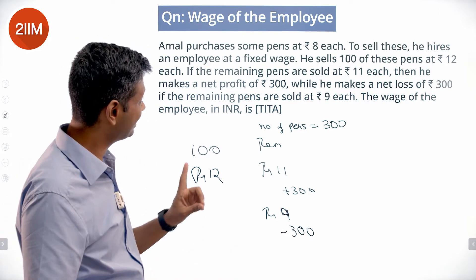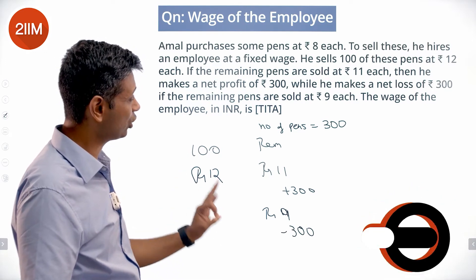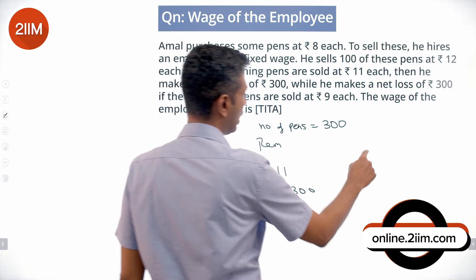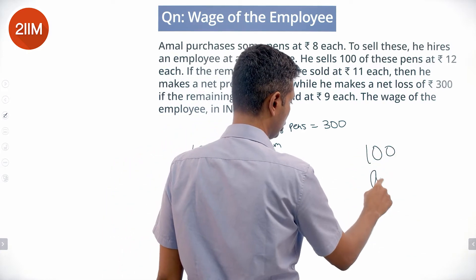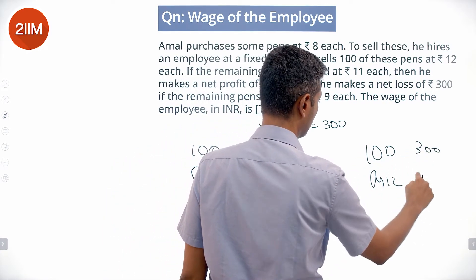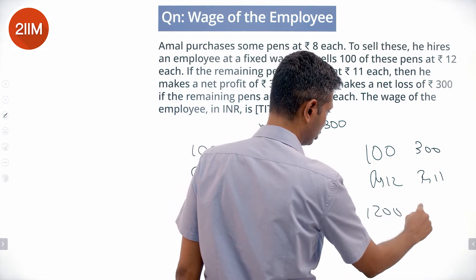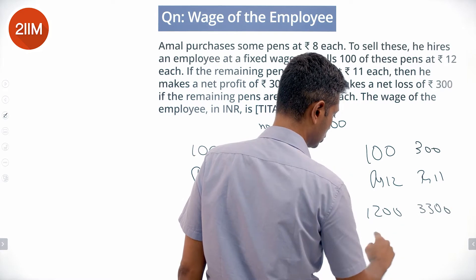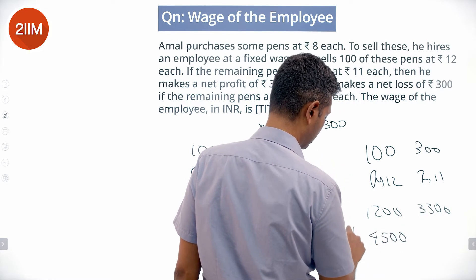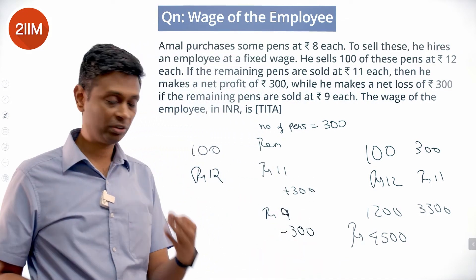Amal purchases pens at Rs. 8 each, hires an employee at a fixed wage, and sells 100 pens at Rs. 12 and 300 pens at Rs. 11. So: 100 × Rs. 12 = Rs. 1200, and 300 × Rs. 11 = Rs. 3300, giving a total revenue of Rs. 4500. Since he makes a profit of Rs. 300, his total cost is Rs. 4200.